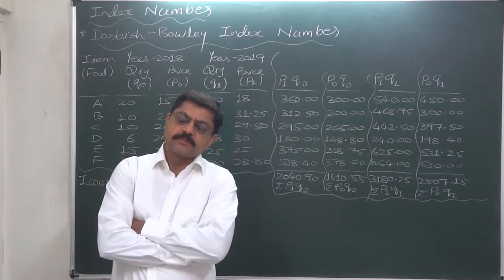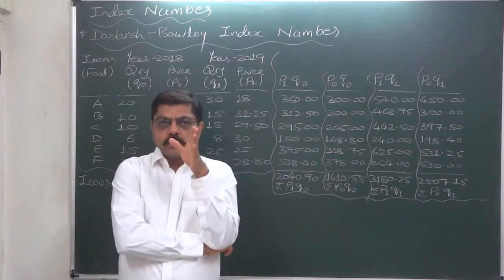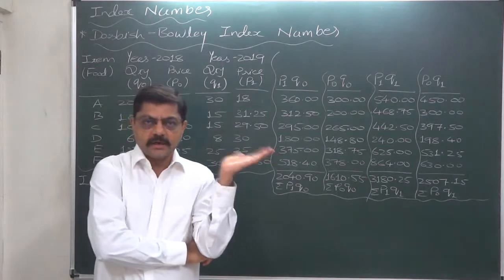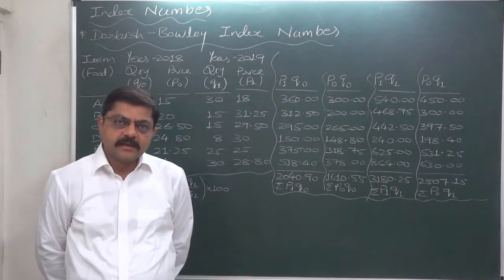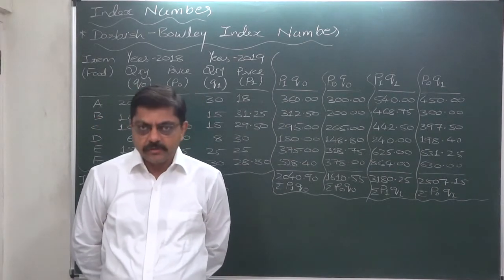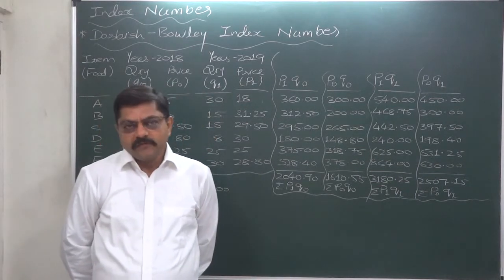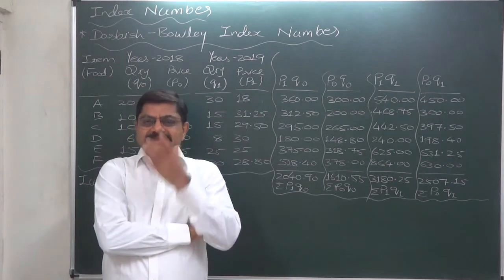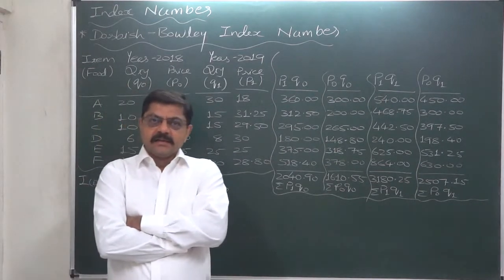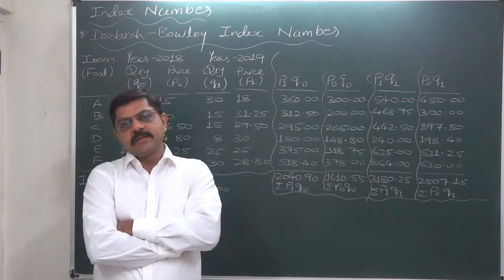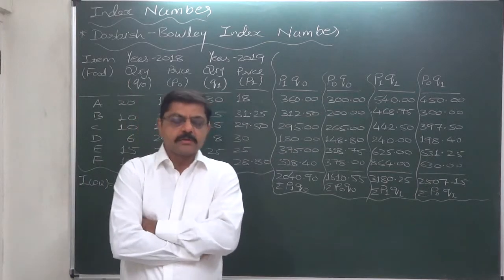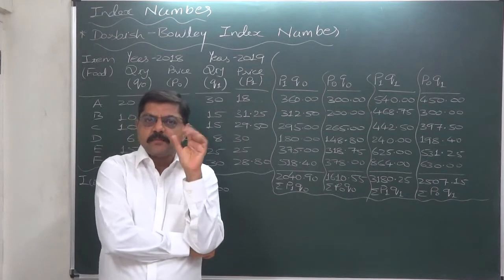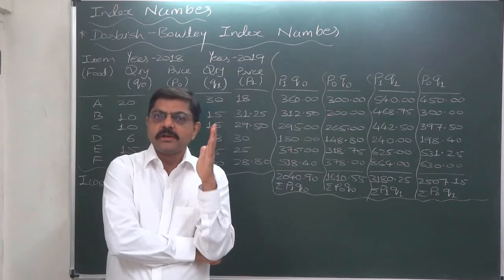We are very well aware that the biggest problem with Laspeyres' index number and Paasche's index number is that both of them consider quantity of the items consumed for only one year out of base year and current year. In case of Laspeyres, we consider the quantity of base year only, and in case of Paasche's index number, we consider the quantity of current year only.